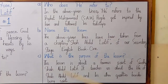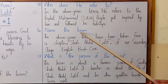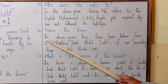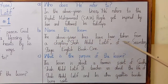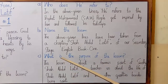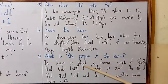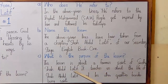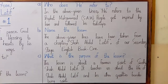Question number 2 — Name the lesson. The answer is: the above given lines have been taken from a chapter 'Shah Abdul Latif' of our secondary stage English book 1. Question number 3 — What is the purpose of the lesson? The answer is: this lesson is about a famous saint of Sindh, Shah Abdul Latif. It teaches us about the life of Shah Abdul Latif and his other qualities besides being a saint.